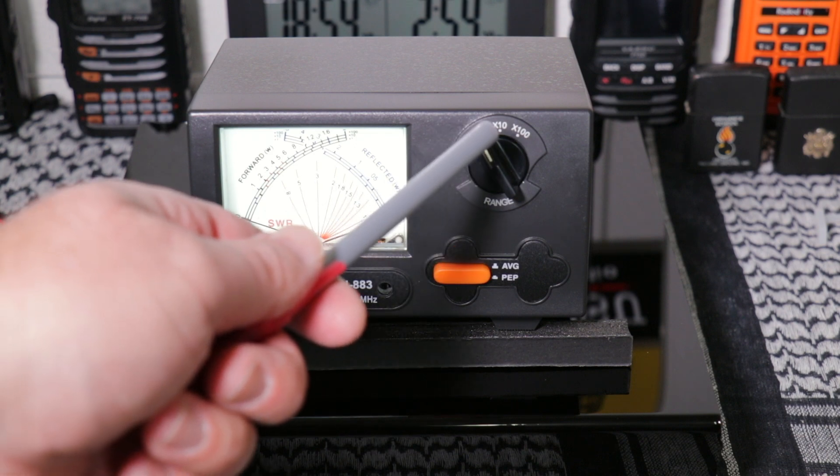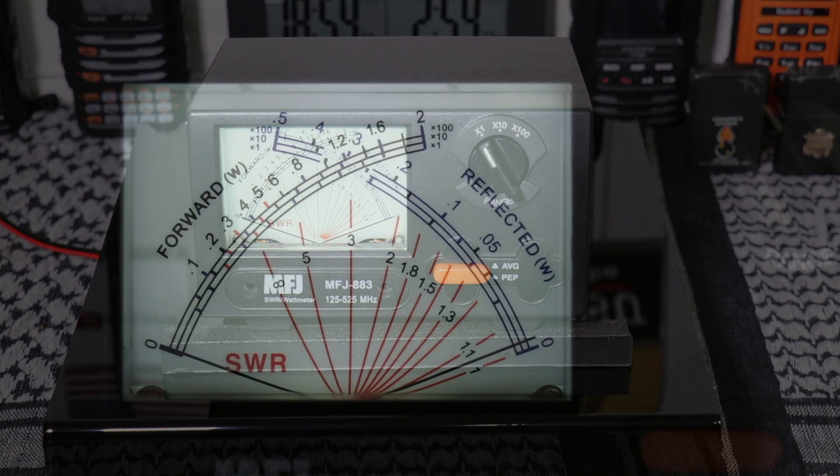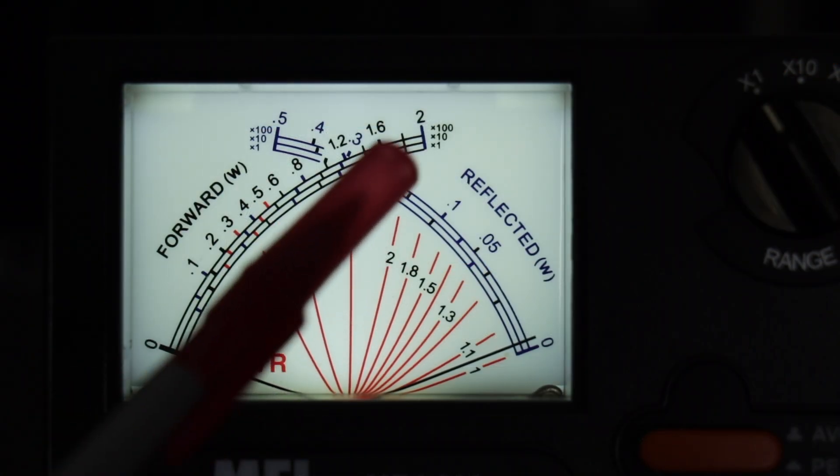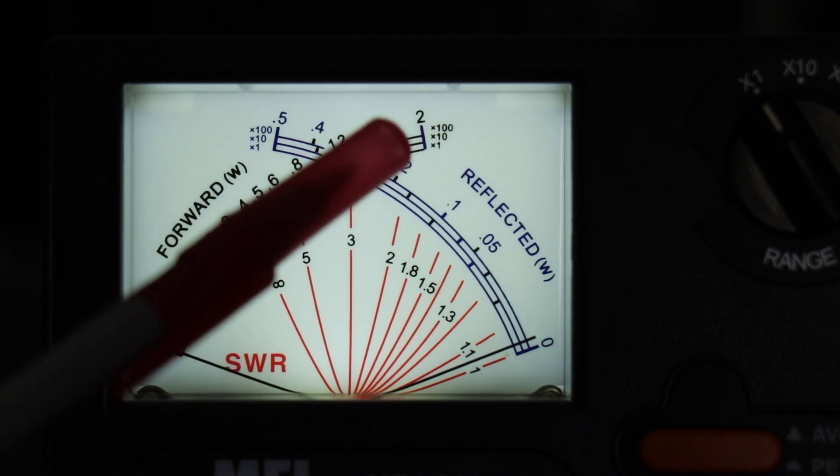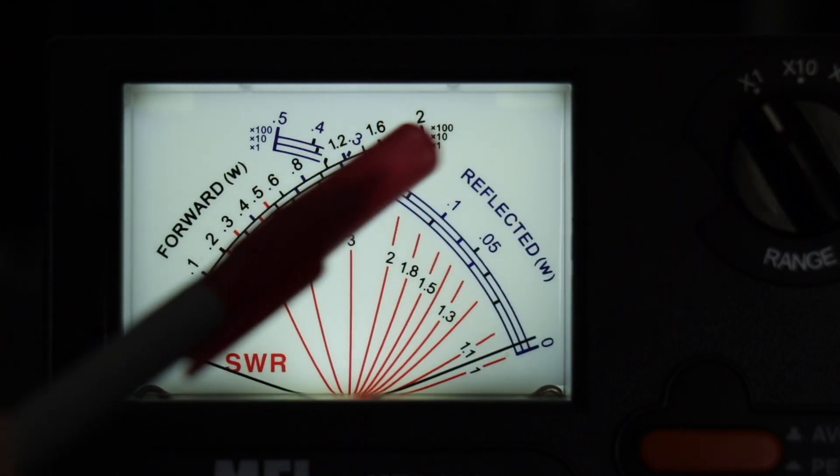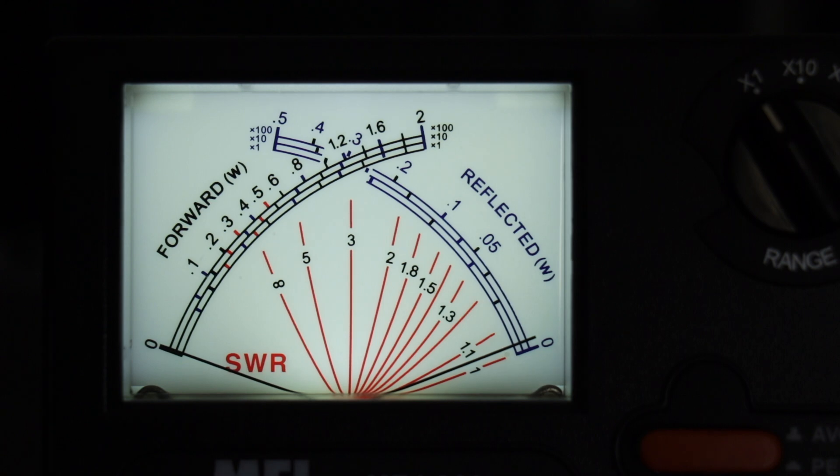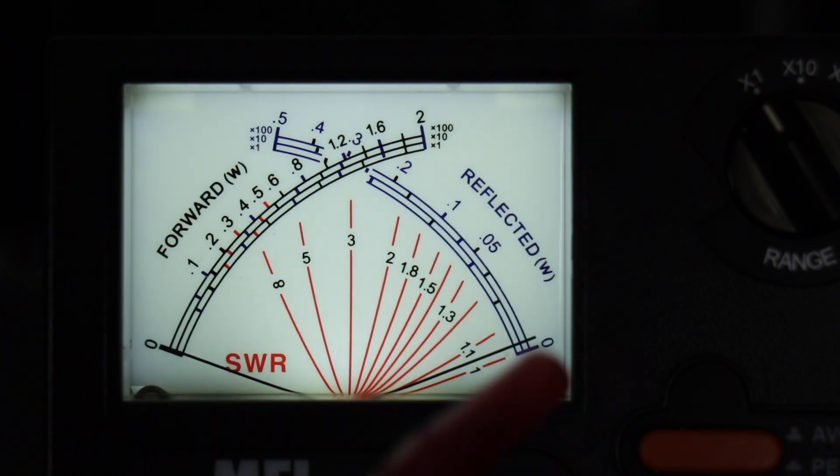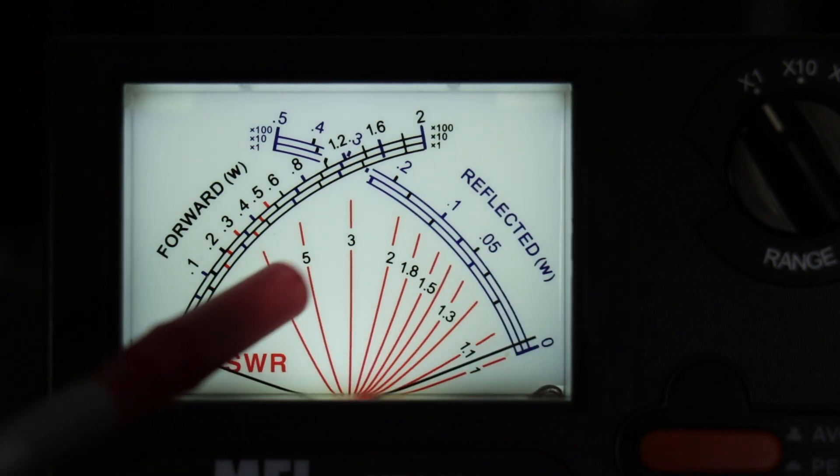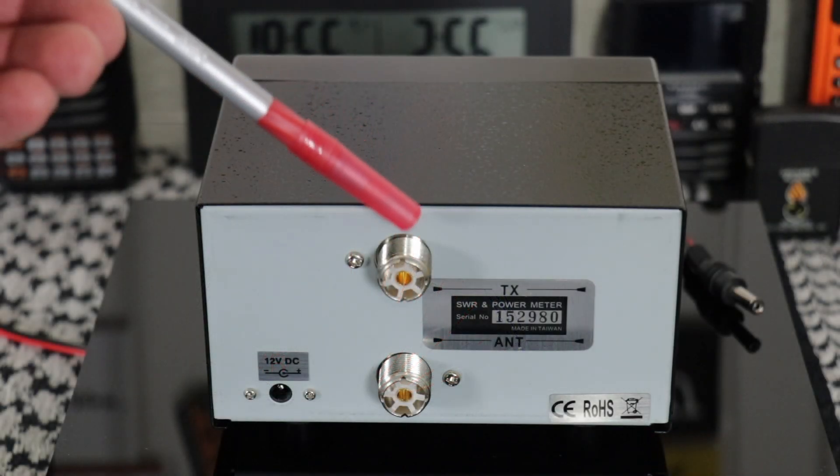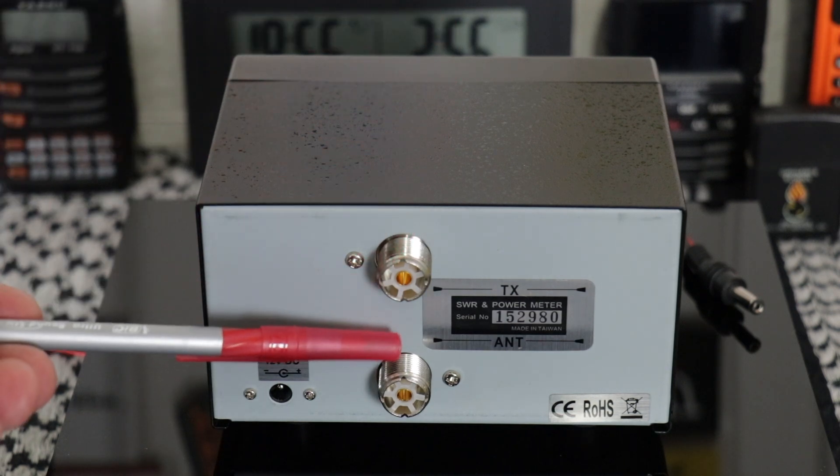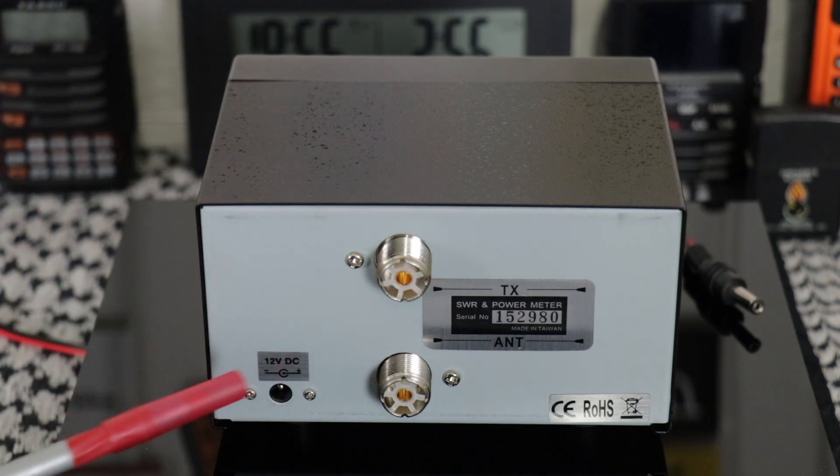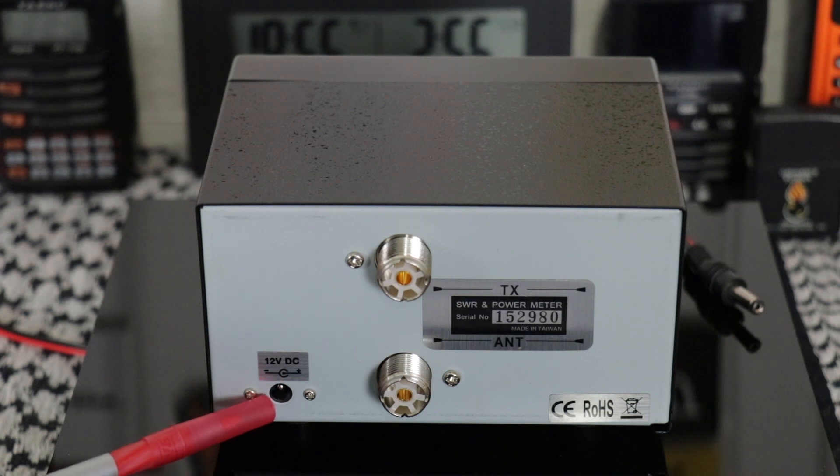You notice the dial says times 1 times 10 times 100. As you can see on the scale it gives you the three corresponding times 1 times 10 times 100 and a number 2 up on top. Just multiply it and that gives you your power rating. You have your forward power, reflective power and all the red is for SWR. The top is where you hook up your transmitter. The bottom is for antenna or dummy load and here's where you hook up the 12 volt wire for the light.